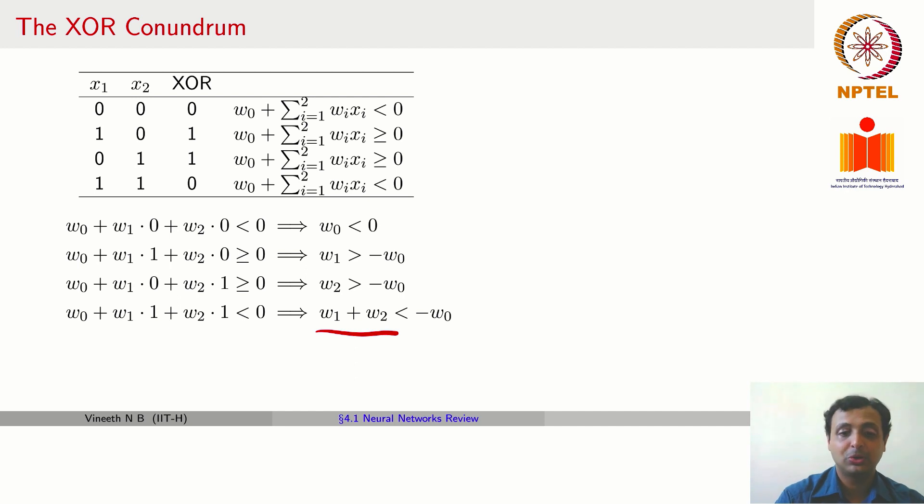It is quite clear here that because w1 and w2 will be positive, w1 + w2 cannot be less than -w0, because we know that individually each of them are greater than -w0, which itself is a negative number. w0 by itself is a negative number, so -w0 will be a positive number. We can see a contradiction in these criteria here, and that should clearly show you why a perceptron cannot solve the XOR problem.